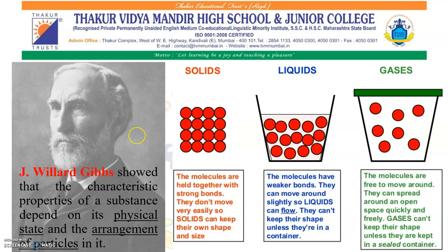In solids, you can see the arrangement of molecules — represented by red circles. The molecules are held together with strong bonds and are tightly packed with each other. They don't move very easily. So solids can keep their own shape and size — they retain their shape and size.